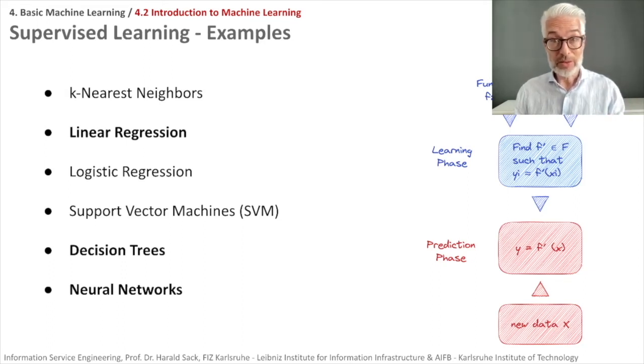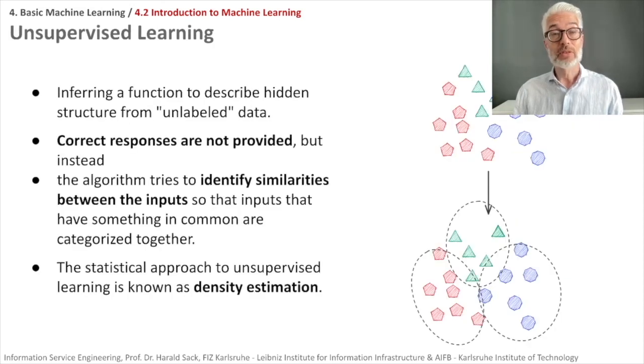Before that, we want to briefly talk about unsupervised learning. There we want to infer a function to describe hidden structure from unlabeled data. We don't have labels or target data available in our dataset. Correct responses are not provided, but instead the algorithm tries to identify patterns, identify similarities between the inputs so that inputs that have something in common are categorized together.